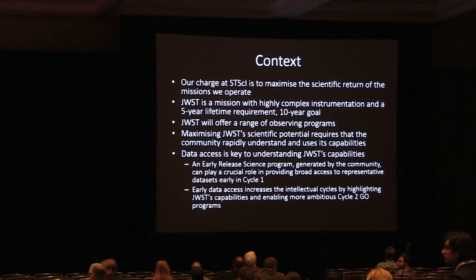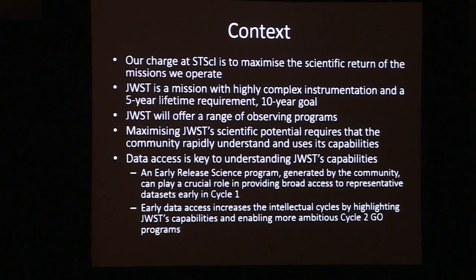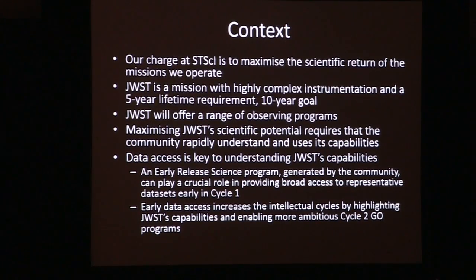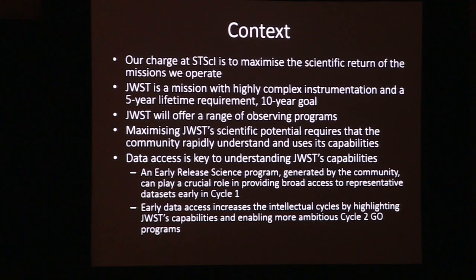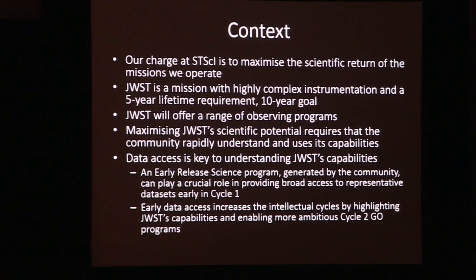Looking at James Webb in particular, we've got a mission with a five-year requirement and a 10-year goal — shorter than Hubble, but longer than Spitzer. JWST will have a range of observing programs. Maximizing the scientific potential using those observing programs requires an informed community. We need to make sure you get up to speed rapidly on what the telescope can do. Data access is key — the best way to understand how something works is to get your hands on some data and play with it. One of the things we'll discuss is early science: getting real science data out to the community as fast as possible.